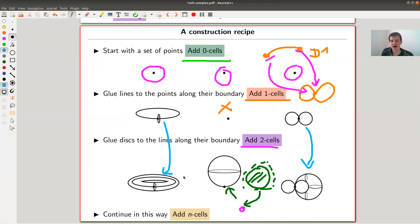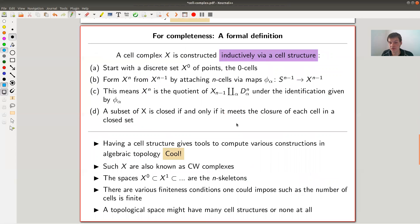There's a lot of freedom what you can do. It all depends on, in each step, you choose how many disks of the corresponding dimension you want to glue, and how you want to glue them to the already existing part. This is what gives you the notion of a cell complex or CW complex.